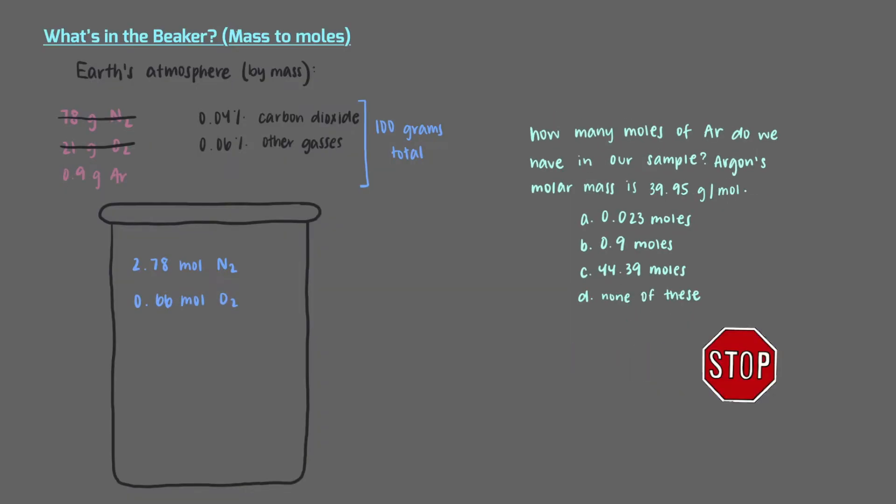How many moles of argon do we have in our sample? Argon's molar mass is 39.95 grams per mole. We start with 0.9 grams of argon, use the molar mass conversion factor, and once we multiply everything out, we get that 0.9 grams of argon is equal to 0.023 moles of argon. We'll update our beaker with this information.